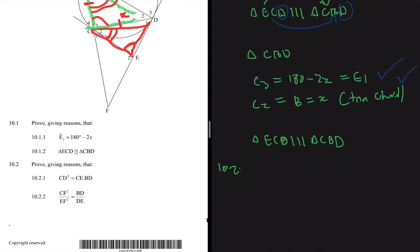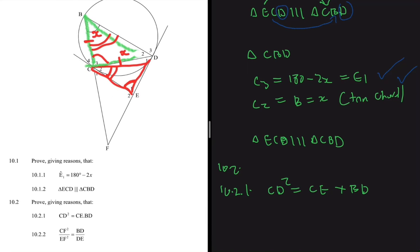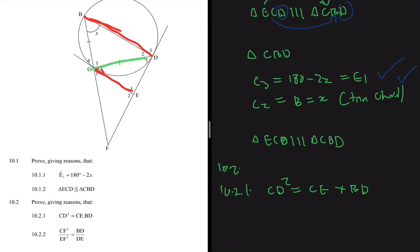Moving to 10.2.1 — we need to prove that CD squared equals CE multiplied by BD. These sides are on our similar triangles, so we can use the fact that those triangles are similar to find what's required for 10.2.1. We use similarity, which we proved through the tan-chord theorem as our main keyword. From what we are required to prove, we need CD, CE, and BD, so our proportionality should involve those sides.